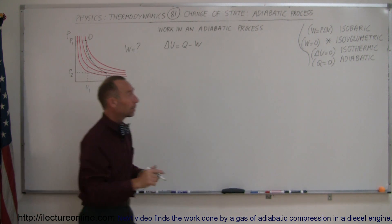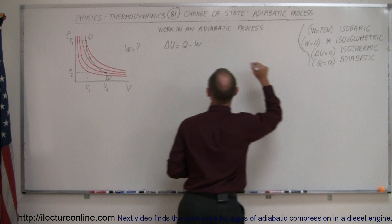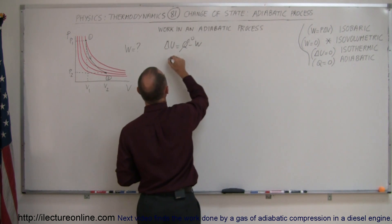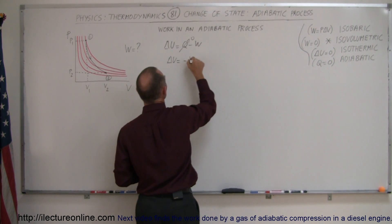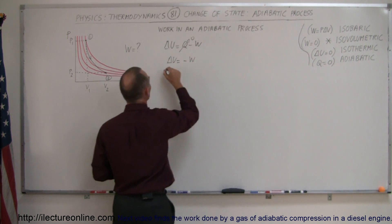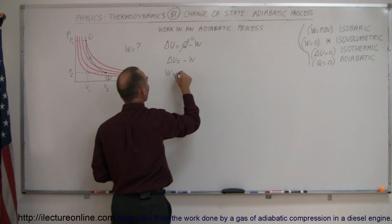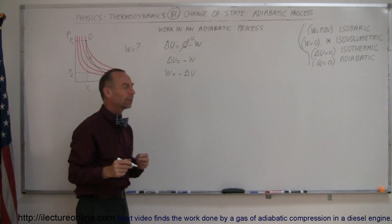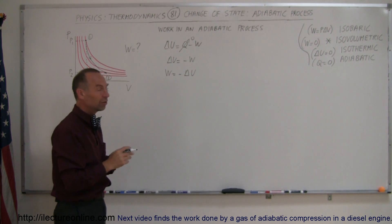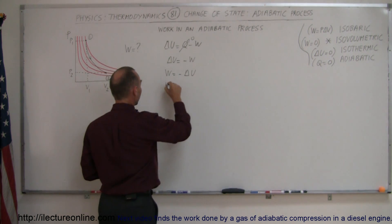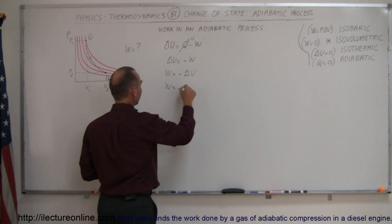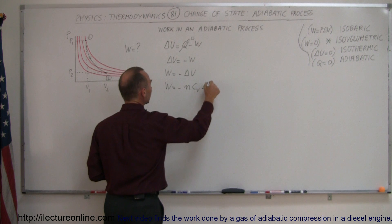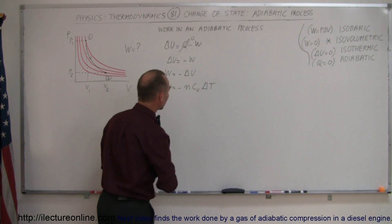For an adiabatic process where Q equals zero, we get delta U equal to minus W, or W equal to minus delta U. And the equation for delta U is N C_V times the change in temperature.